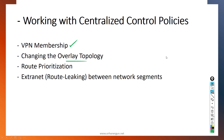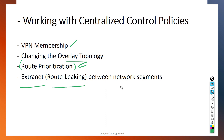We will do route prioritization — for example, to create active and standby data centers by manipulating attributes in OMP routes. We will also configure extranet, which involves route leaking between VPNs: exporting routes from one VPN to another.